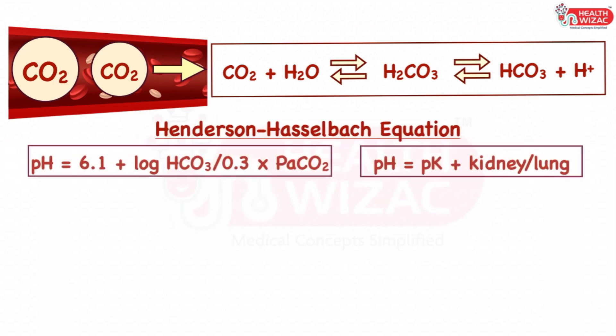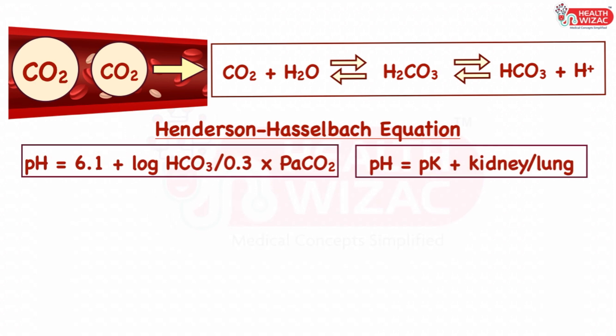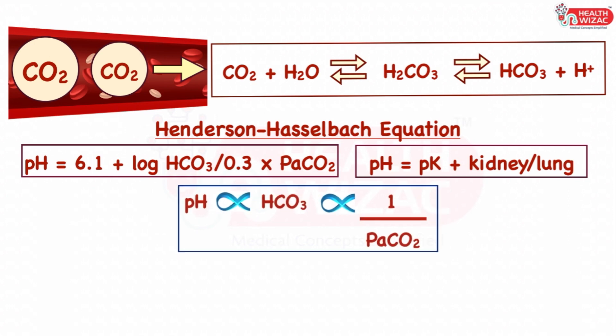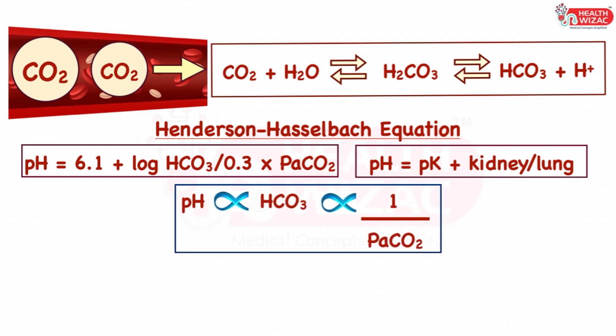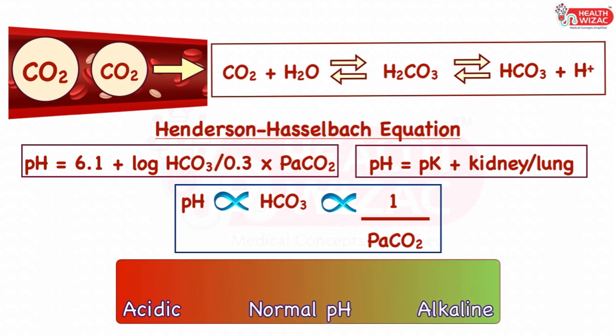As per the Henderson-Hasselbalch equation, pH = 6.1 + log(bicarbonate / 0.3 × PaCO2), or pH = pK + kidney / lung. This means pH is directly proportional to bicarbonate and inversely proportional to CO2. Any change in CO2 or bicarbonate causes a shift of the equation making the pH acidic or alkaline.